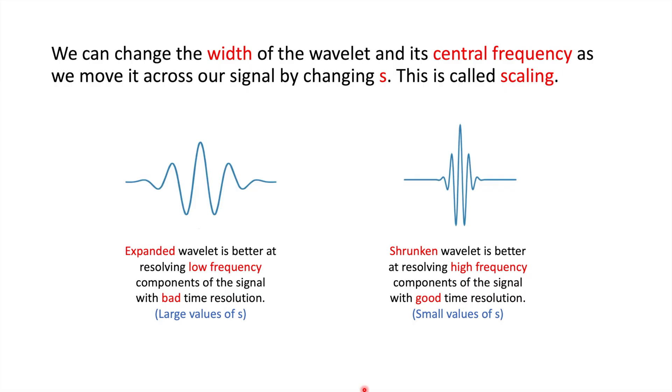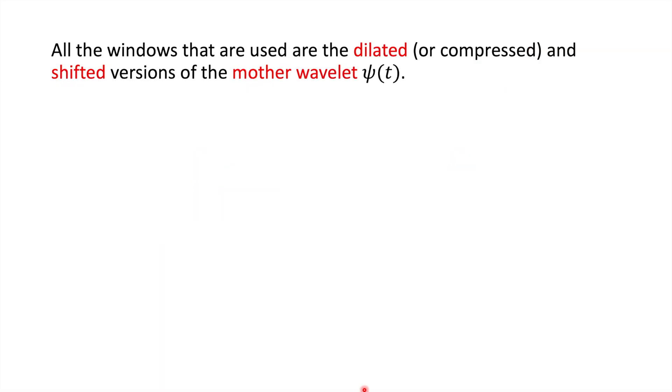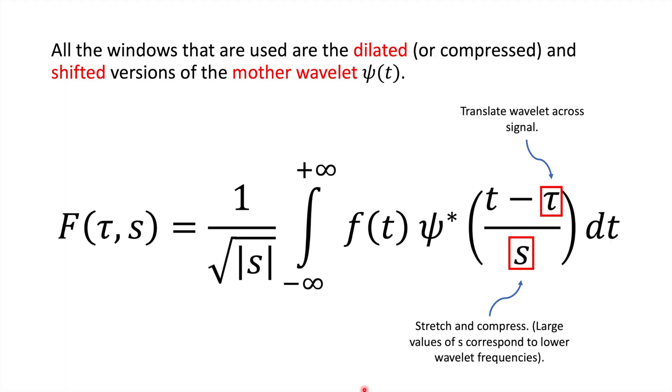So now, with the wavelet transform, we can change the width of our window function, which helps us to resolve high frequency components and low frequency components with good resolutions, both. So all the windows that are used are the dilated or compressed and shifted versions of the mother wavelet, psi of t. Going back to our integral, we see that the wavelet is translated across our signal using tau, like our window function, but it's also scaled by dividing by s. So this stretches and compresses the wavelet. Large values of s correspond to lower wavelet frequencies.